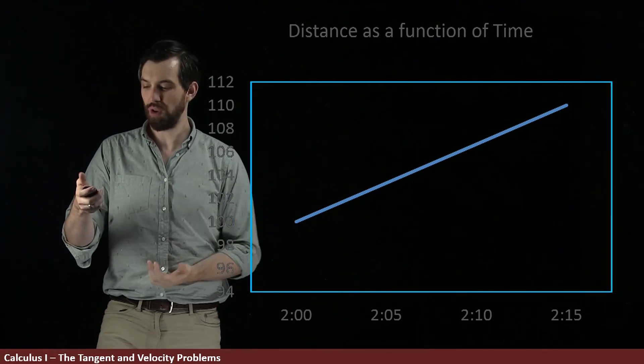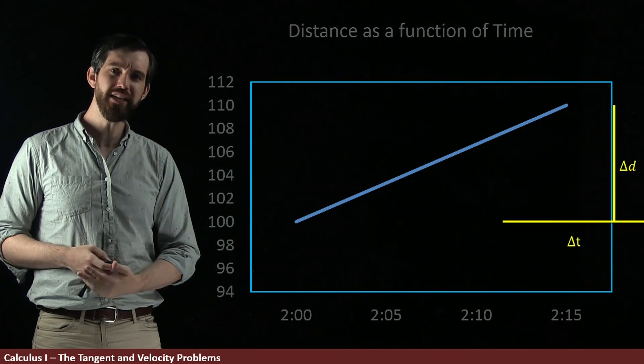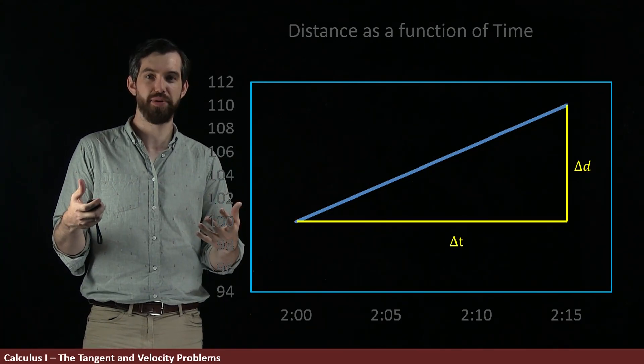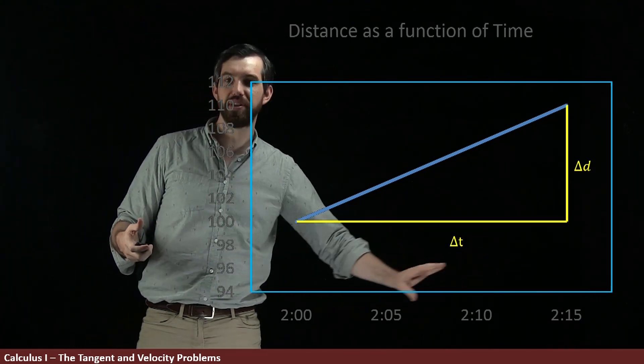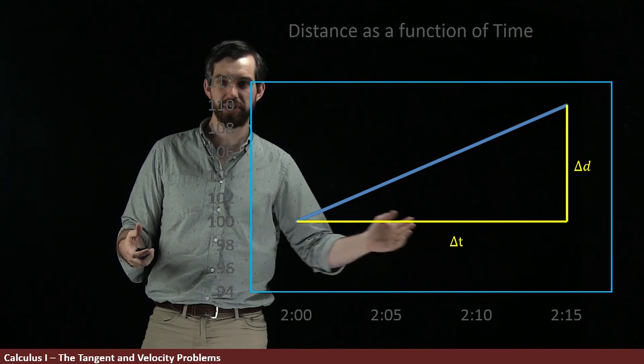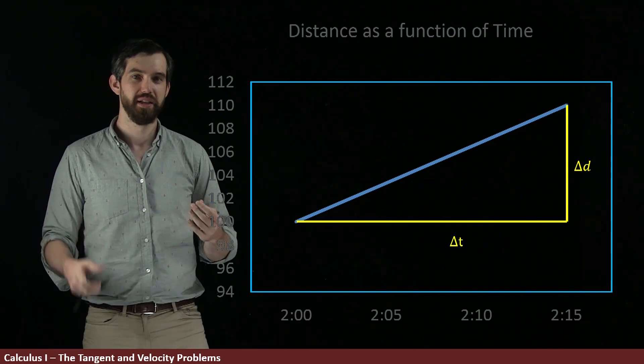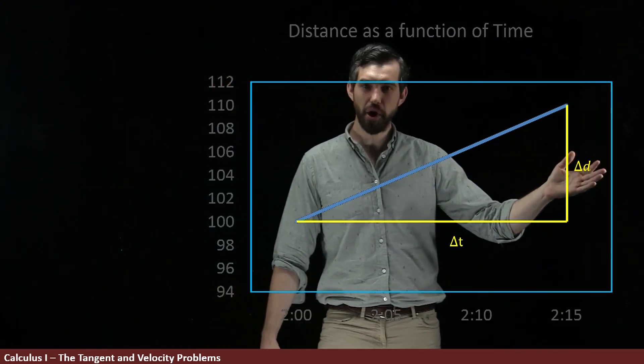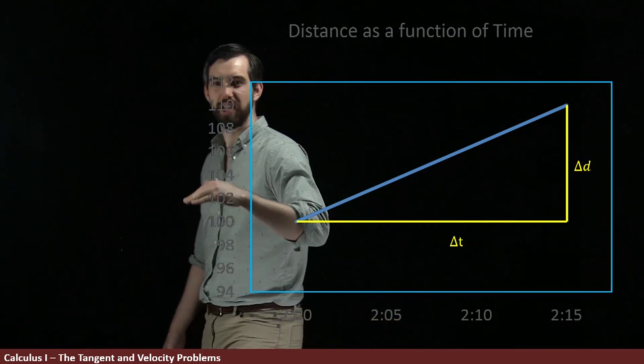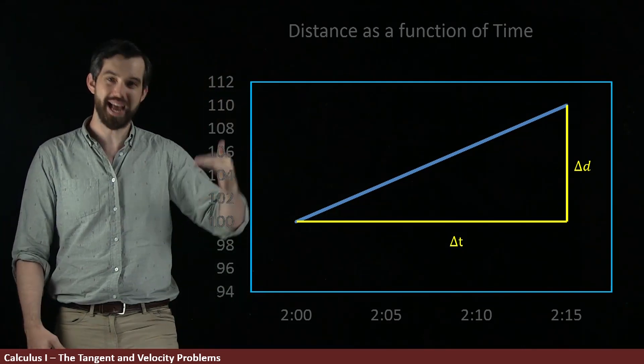So let's try to figure out what the average velocity is. Well, the change in distance and the change in time are given here. We've got time down here on our x-axis and we get a change in time between 2 o'clock and 2:15. That's our 15 minutes. And then likewise, we get this delta D over here that's going from the 100 miles up to the 110 miles, so a 10 mile difference.